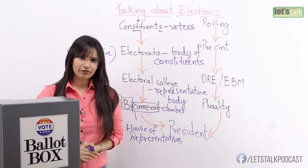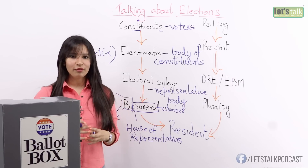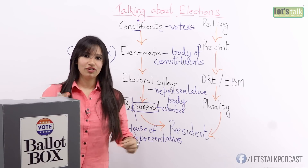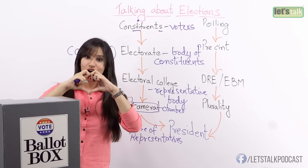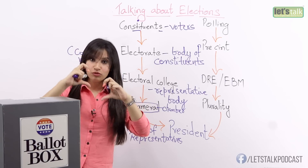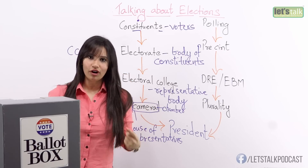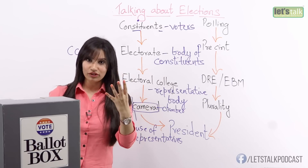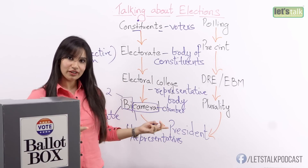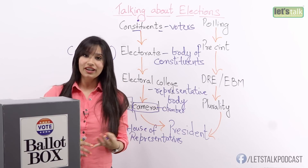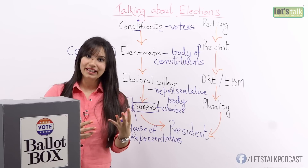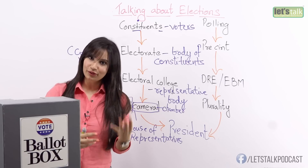Is it too hard to remember? Just think of a fish. A fish has a bicameral heart, which means it has two chambers, unlike the human heart which has four chambers. So a fish has a bicameral heart, and in the same way the US and Britain have a bicameral government.